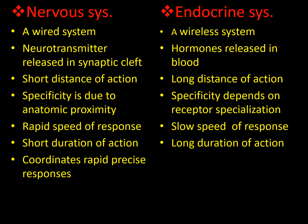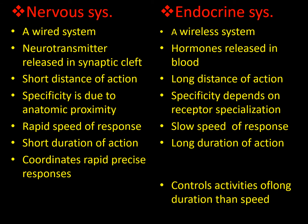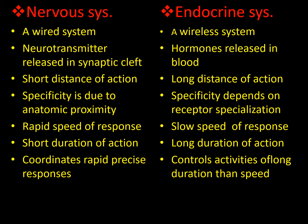The nervous system coordinates rapid, precise responses — very specific and very rapid. The endocrine system controls activities of long duration rather than speed. It maintains its responses for long durations; it is concerned specifically with how long a hormone can elicit and maintain its activities, rather than the speed of response.